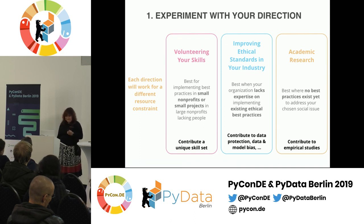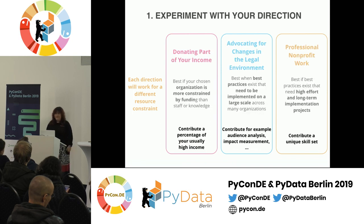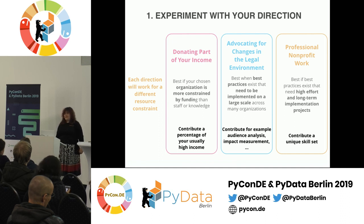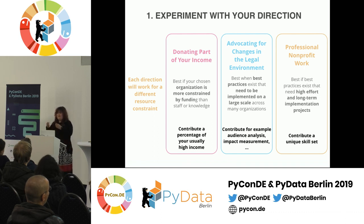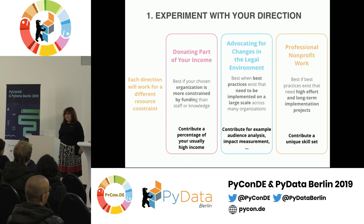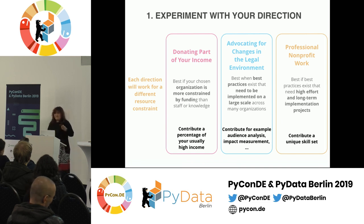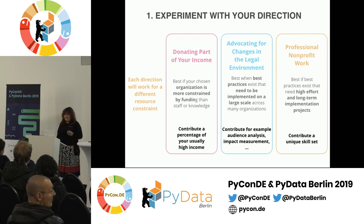One of these approaches is volunteering your skills. Another is improving the ethical standards in the industry or sector you're working on — things like algorithmic rules and ethical standards. Then there's academic research, which is especially impactful if nobody really knows yet how to work on the social issue. Another straightforward one is donating a part of your income. There's also advocating for legal changes — political and advocacy work making sure that laws are supportive, especially important for large-scale change. And last but not least, professional nonprofit or social sector work, especially important if there's a lot of work to do and it's a well-funded organization.